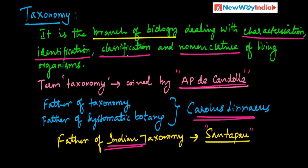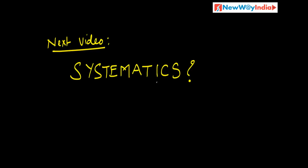What is Taxonomy? It is a branch of biology dealing with characterization, identification, classification, and nomenclature of living organisms. In the next video we will see what is Systematics — from which word Systematics came and all those things. Thank you so much.